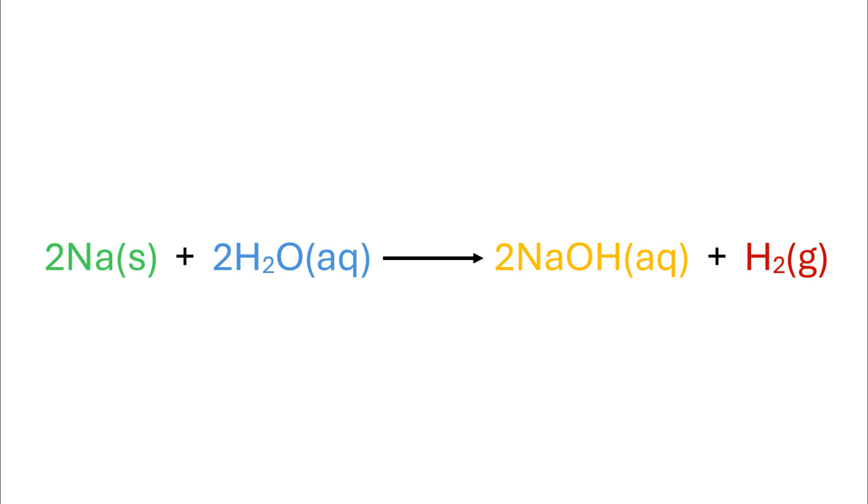The smoke-like gas produced from the surface of the metal is hydrogen gas. The reaction also produces copious amounts of heat, so much so that the hydrogen gas, which is a highly flammable gas, may also ignite and the sodium metal appears to catch fire.